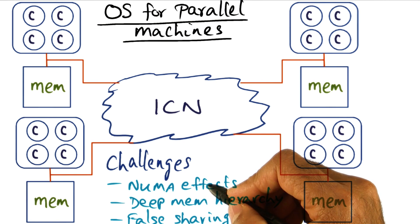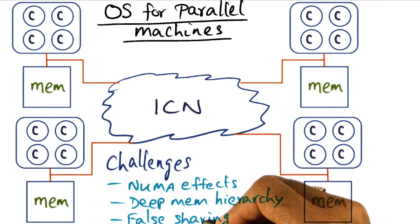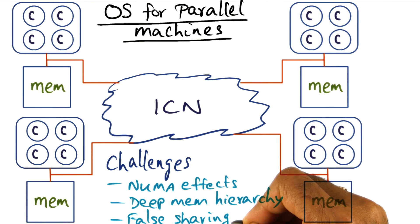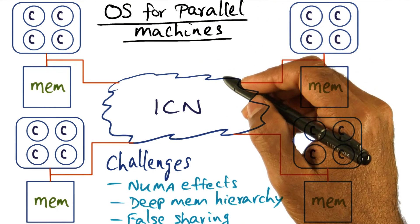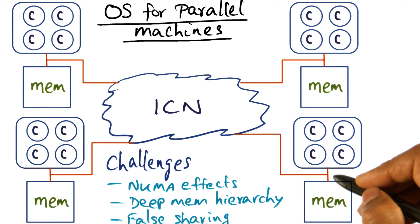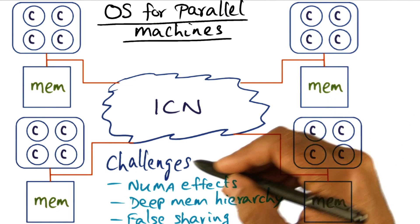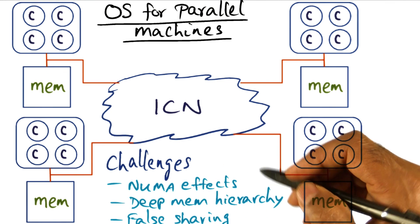So all of these effects, the NUMA effect, the deep memory hierarchy, and increasing block size leading to false sharing, all of these are things that the operating system designer has to worry about in making sure that the algorithms and the techniques that we have learned, when it is translated to a large scale parallel machine, it remains scalable. So that's really the challenge that the operating system designer faces.